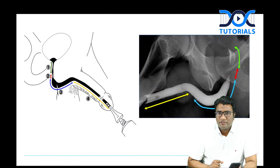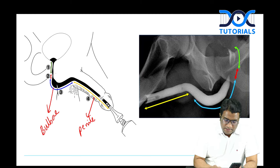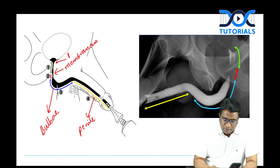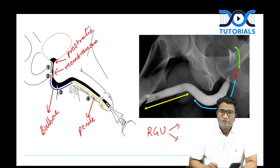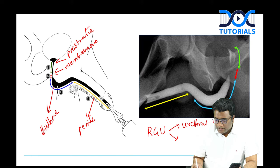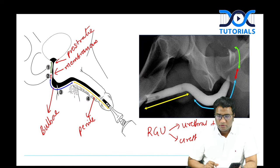On RGU: the penile (spongy) urethra is anterior, the curved part is the bulbar urethra, the narrow posterior part is the membranous urethra, and close to the prostate is the prostatic urethra. RGU is the investigation of choice for urethral trauma and urethral strictures. Know all parts: penile, bulbar, membranous, and prostatic urethra.